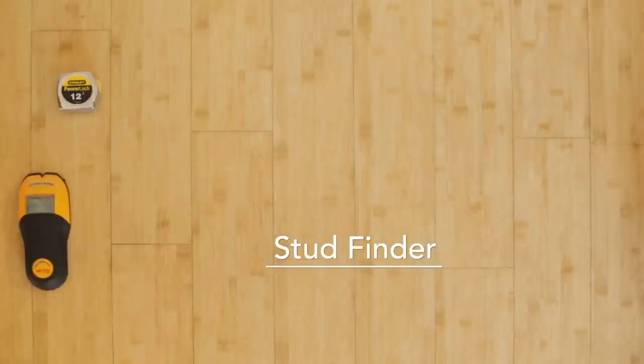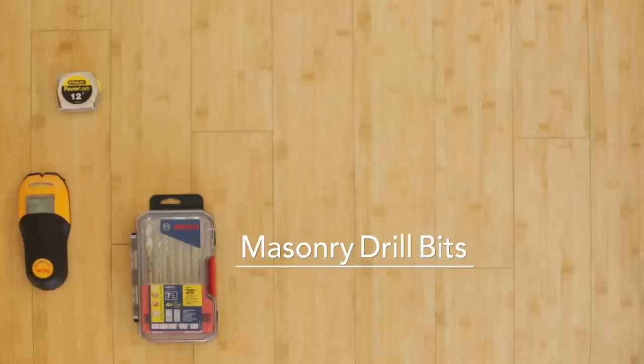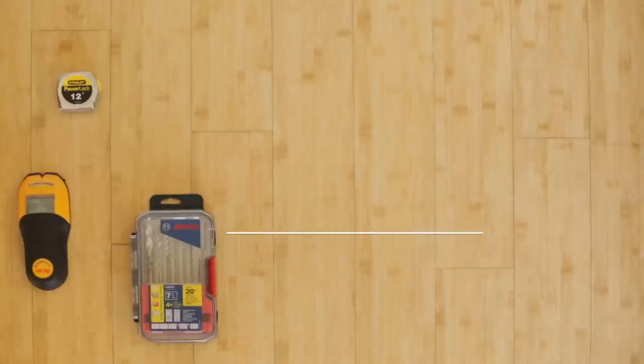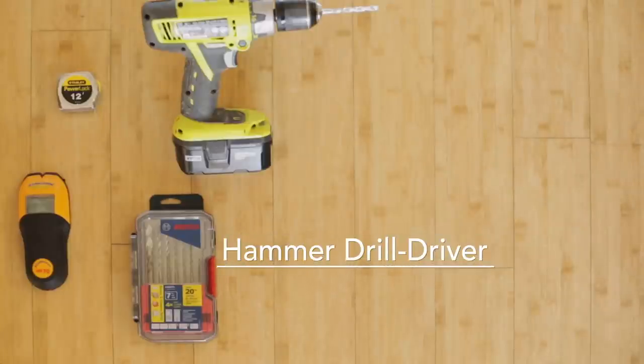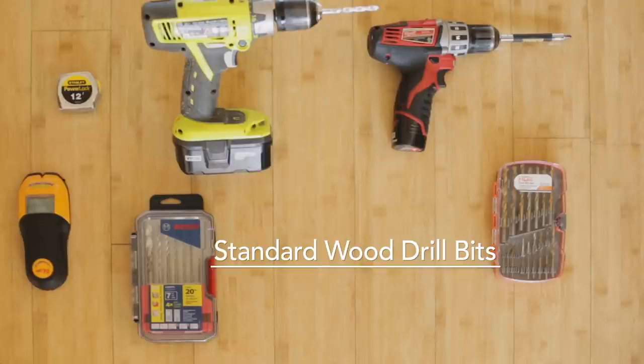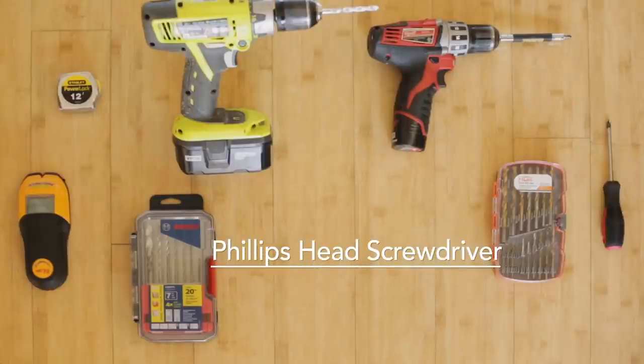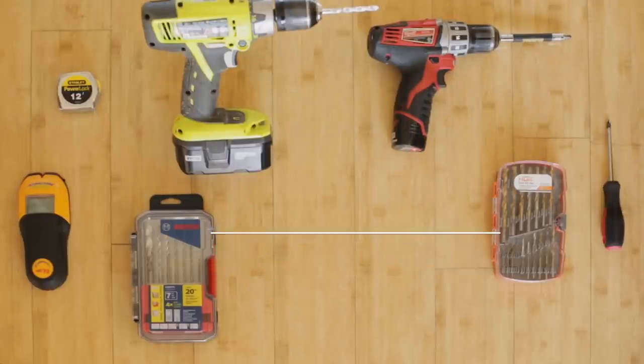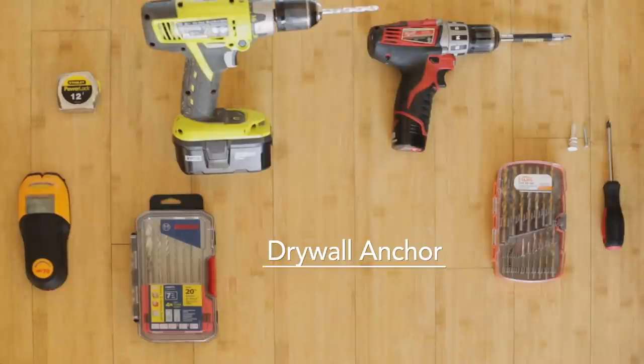Today we'll be using a tape measure, an electric stud finder, a set of masonry drill bits, an 18-volt cordless hammer drill, 12-volt cordless standard portable drill, a set of standard wood drill bits, a Phillips head screwdriver, and your wall anchors and mounting hardware.